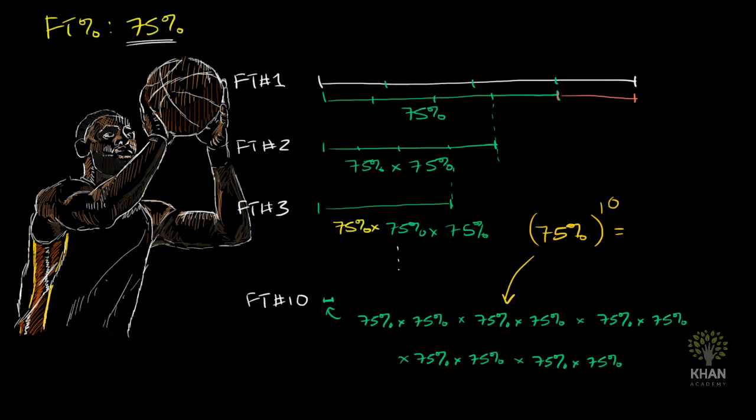And 75%, the word percent literally means per hundred. You might recognize the root word cent from things like century, a hundred years in a century, a hundred cents in a dollar. So this literally means per hundred. So we could write this as 75 over 100 to the 10th power, which is the same thing as 0.75 to the 10th power.